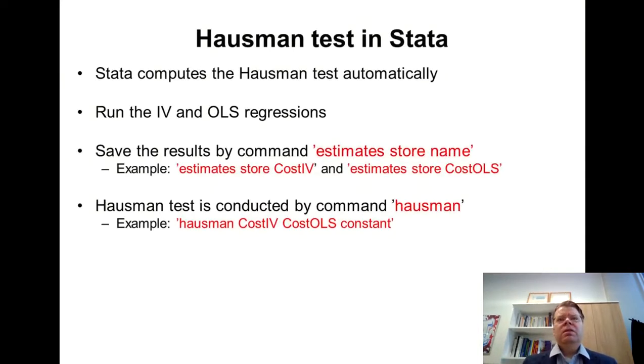It's most convenient to do the Hausman test in Stata. It's possible to do it also in Excel, but then you need to manually calculate the test statistic. I have done it here in the case of the electricity distribution example in Stata. The idea is that whatever software we use, we need to run both the IV regression and the OLS regression, and then compare the results. Here are some tips for doing it in Stata: you need to save the results using estimate store.